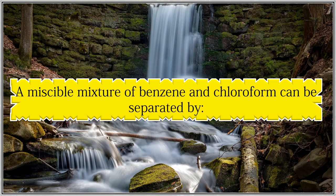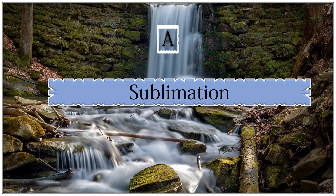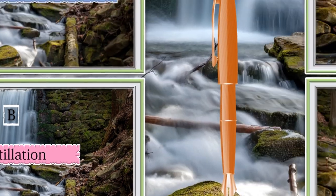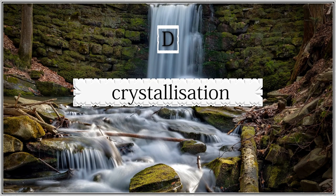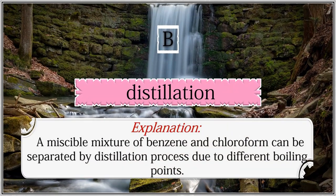A miscible mixture of benzene and chloroform can be separated by: (A) sublimation, (B) distillation, (C) filtration, (D) crystallization. The answer is distillation. A miscible mixture of benzene and chloroform can be separated by the distillation process due to their different boiling points.